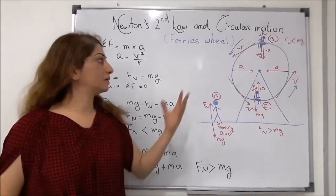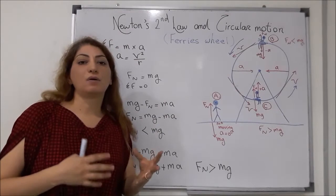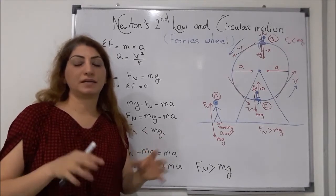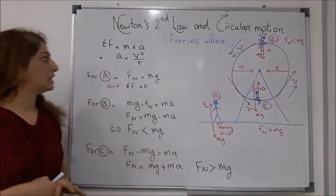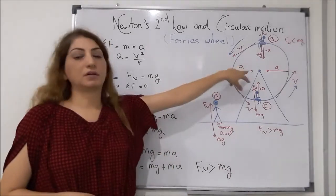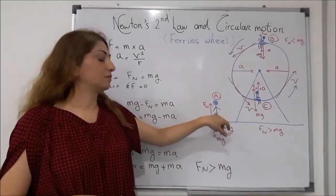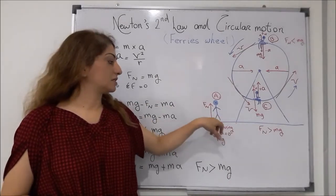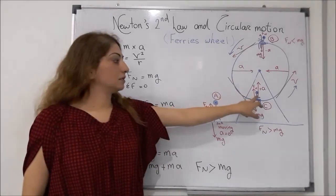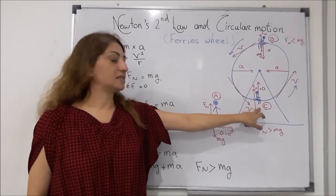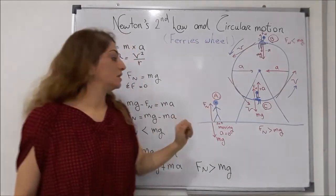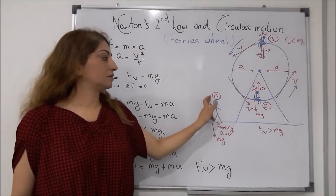Now let's look at the first wheel — circular motion — and how forces act on objects at each place on the path. In the Ferris wheel case, imagine three people: two of them are in the Ferris wheel and one is standing still next to it. One person is at position C, another is at the top of the Ferris wheel at position B, and the person standing on the ground is position A.